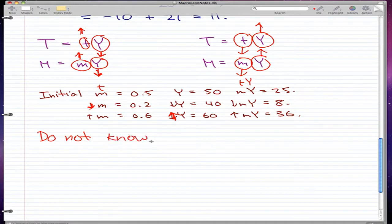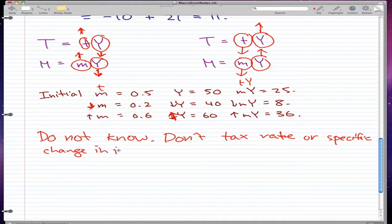Why don't we know? Because we don't know the tax rate or the specific change in income. Essentially, we have to know the exact numbers for t and y, or m and y, to actually get the direction that the product would go.